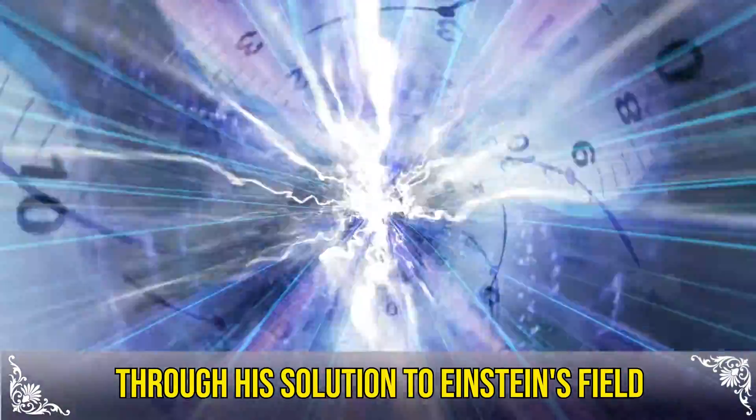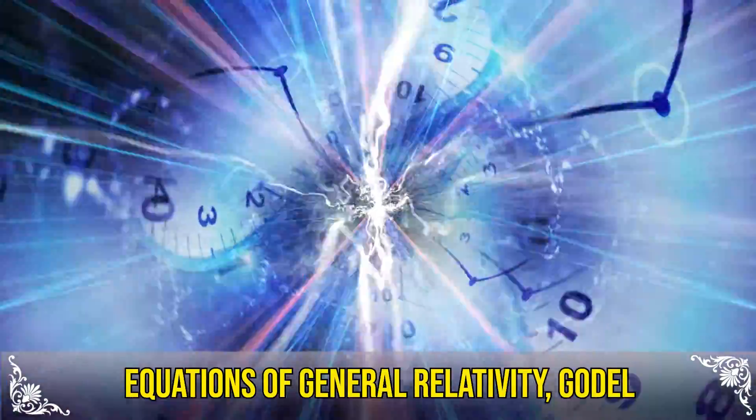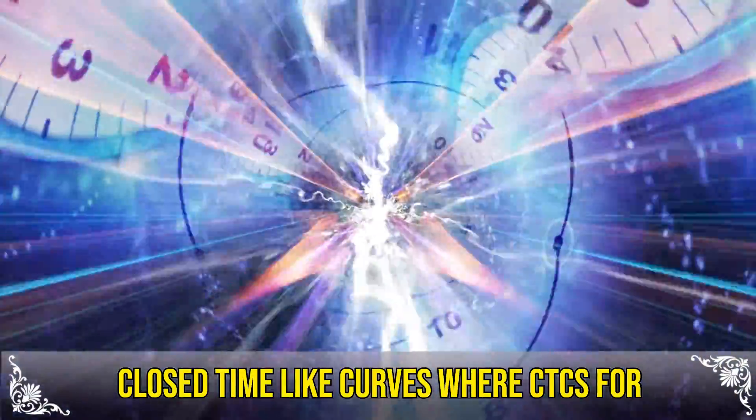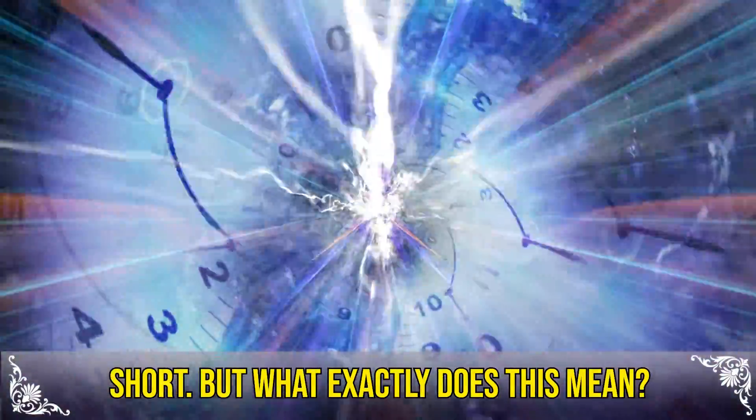Through his solution to Einstein's field equations of general relativity, Gödel introduced us to the possibility of closed time-like curves, or CTCs for short. But what exactly does this mean?